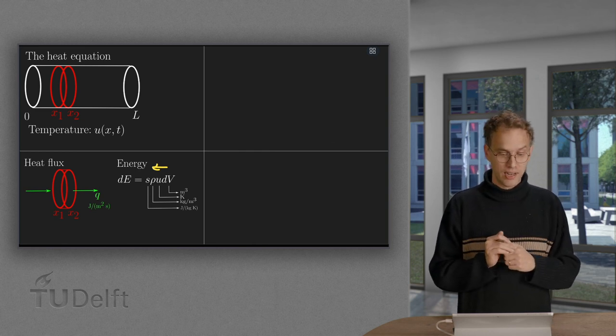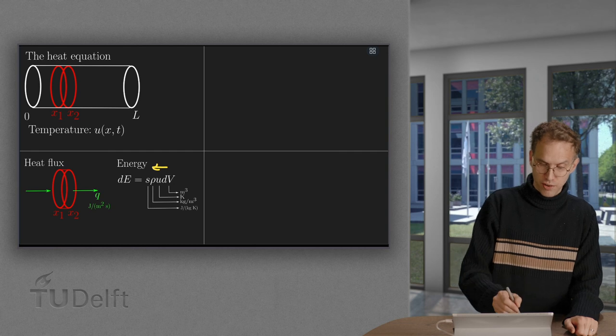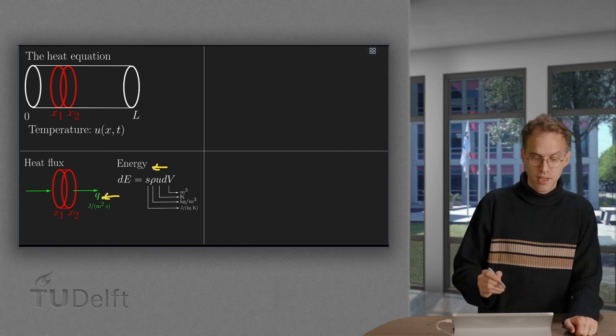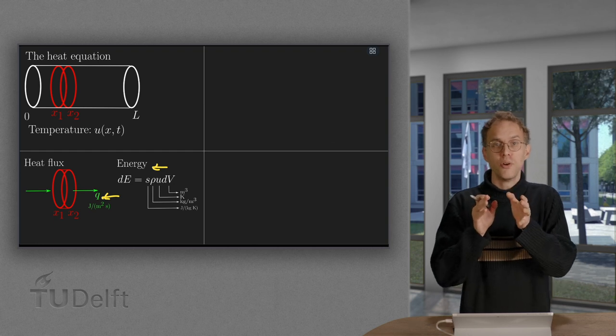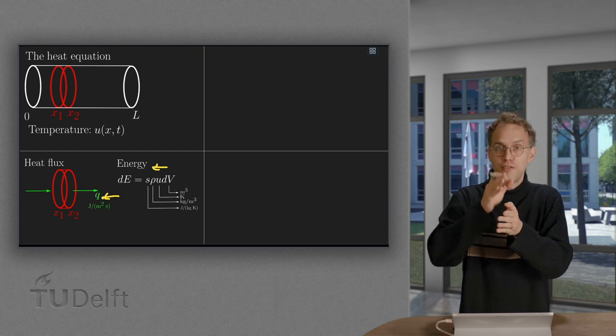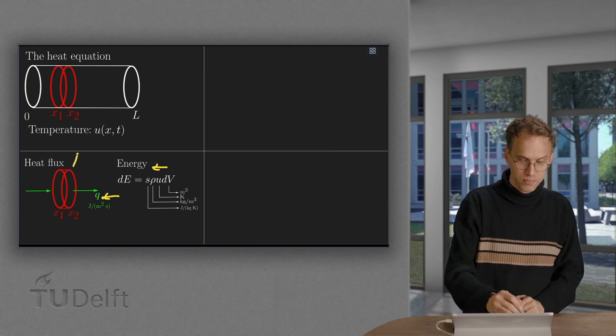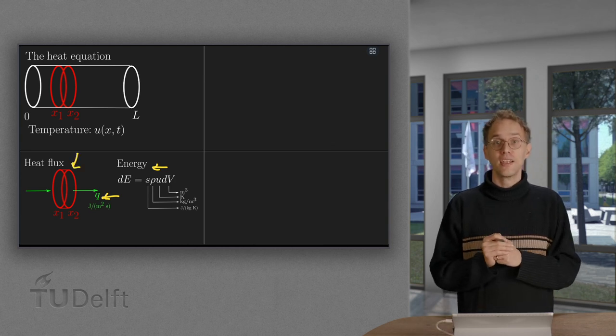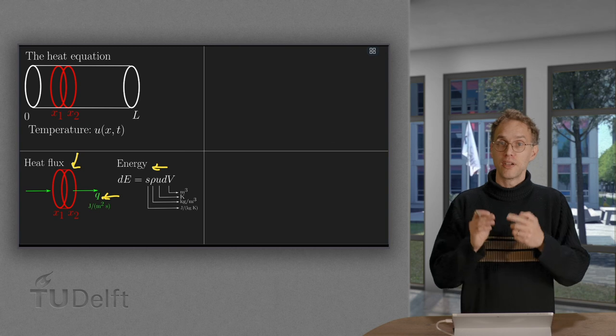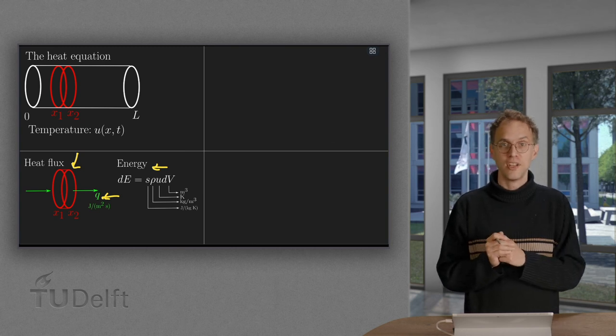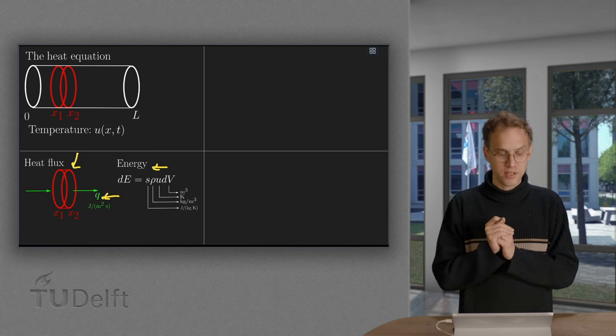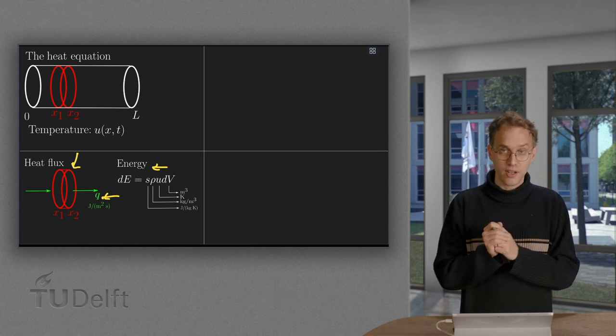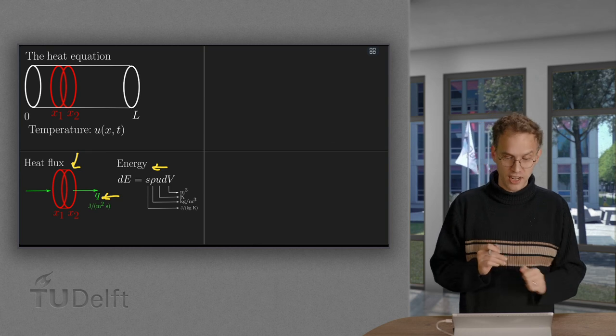Now, energy will flow in and out via a so-called flux Q, where the flux Q is the amount of joule, the amount of energy flowing through the area, given in units joule per square meter second. So, the total amount of energy flowing through this segment equals the Q times A, its area.